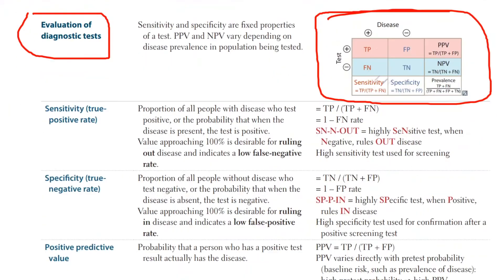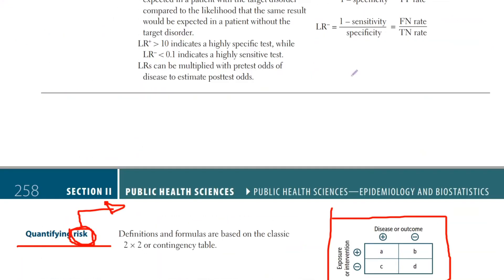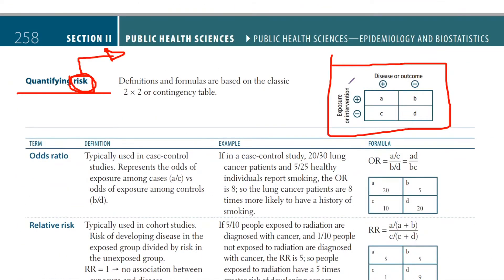If you're already familiar with this sort of table, the only difference here is that instead of 'test' we're using 'exposure' or 'intervention.' In a cohort study for example, we're putting people into two different groups — one that is exposed and one that is not exposed — and then we're seeing each group's risk of developing the disease and reporting them. Sometimes the exposure can benefit the group and sometimes it can worsen the chance of developing the disease.